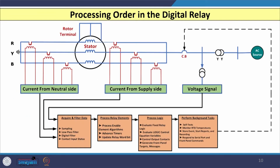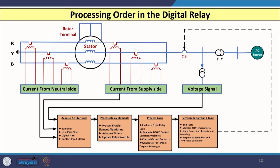Before discussing the various functions and capabilities in detail for digital relays used for induction motor protection, let us see the processing order in the digital relay. As shown in the three-phase diagram, the stator of the motor has three CTs on the neutral side and three CTs on the terminal side. The CT secondary currents from both the neutral side and the supply side are given as inputs for processing in the digital relay, along with the secondary output of the voltage transformer or potential transformer.